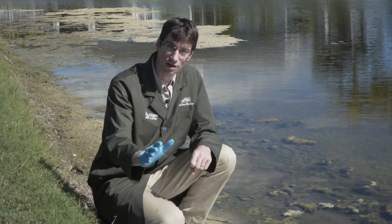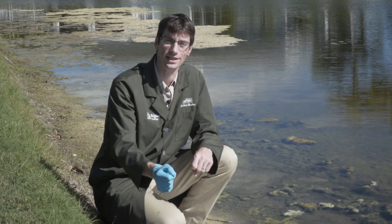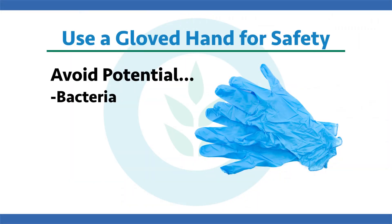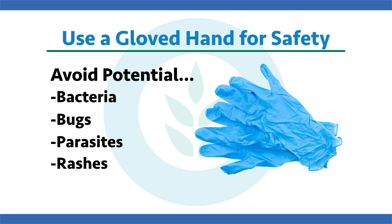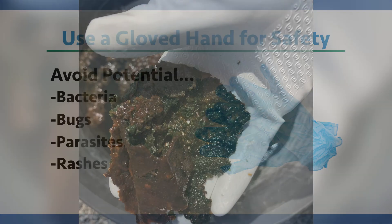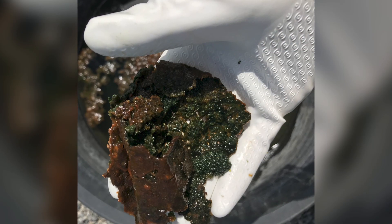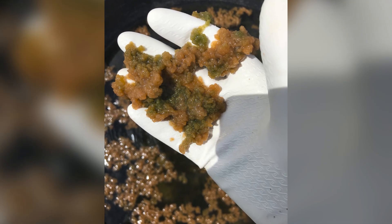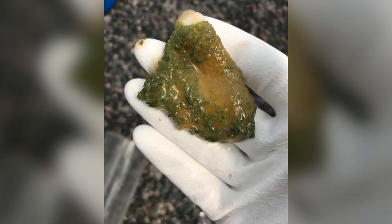If you noticed, I used a gloved hand to do this hand test identification, and there are many reasons for that. Some of these algal mats can harbor bacteria that can make people sick. Sometimes there are leeches or other bugs in there that may bite you that you don't want on your skin. Sometimes there are parasites you don't want getting in you. Also, some of the dermatitis toxins that cyanobacteria can produce can cause rashes. Overall, it's good to use a gloved hand if you can, and be sure to wash your hands with soap and water anyway just to make sure after doing this hand test identification.